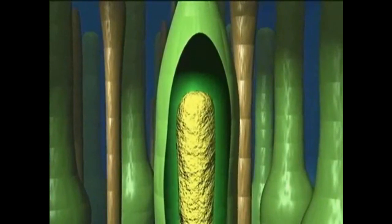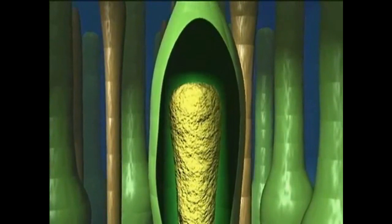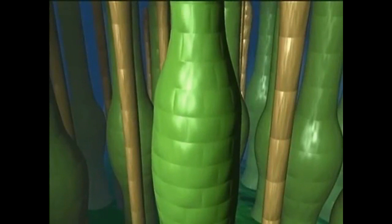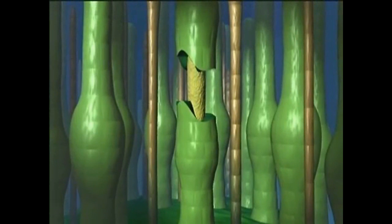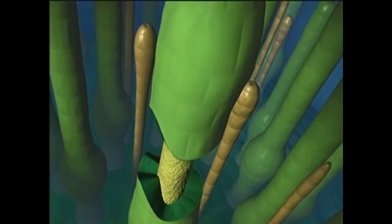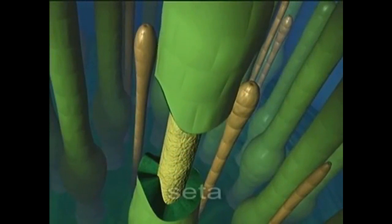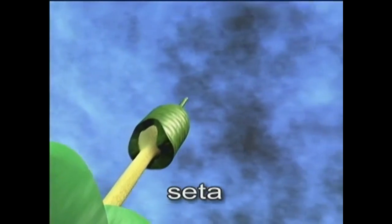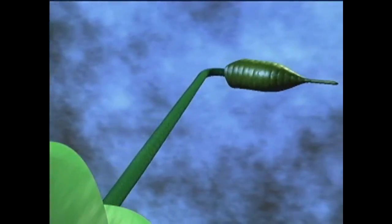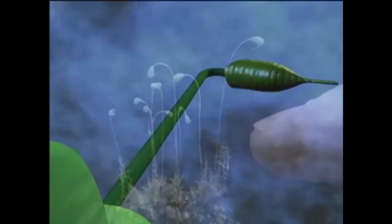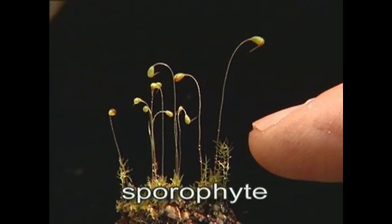The other end of the embryo grows upward. The venter expands to accommodate this growth, but eventually it is split in half. The embryo now forms a very long stalk or seta that lifts the top half of the venter up into the air. This results in a small diploid plant, the sporophyte, attached to the tip of the female stem.